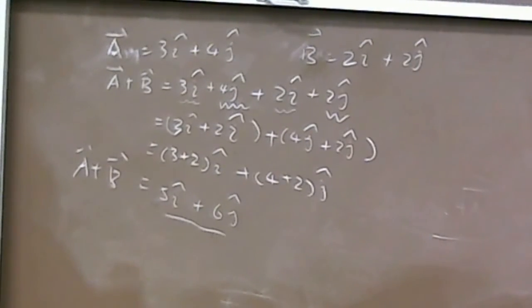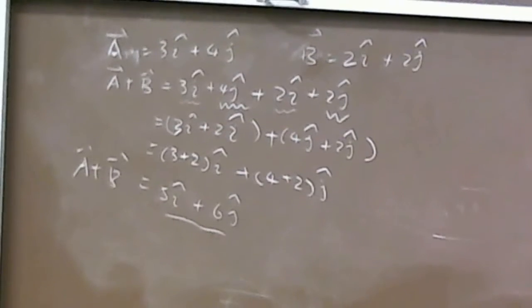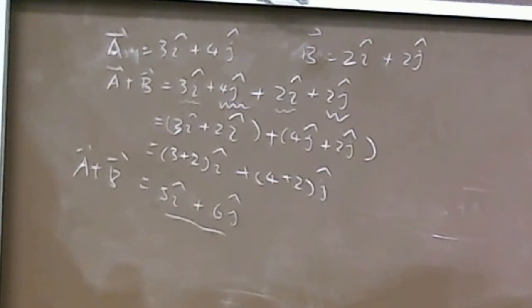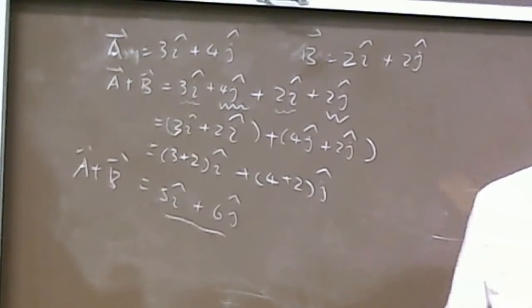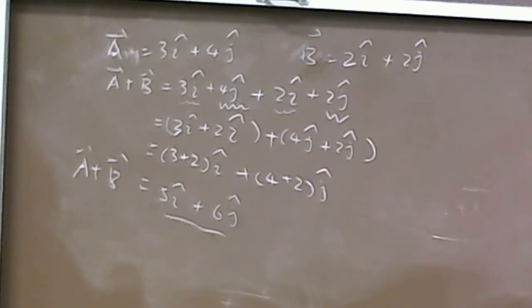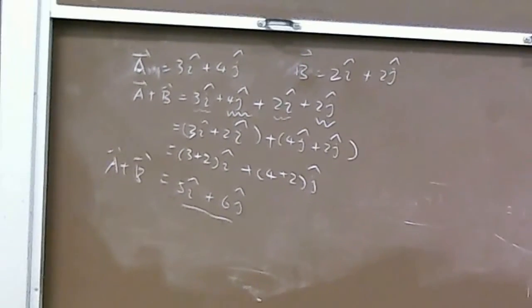And here, for the subtracting vectors, with the same kind of algebraic manipulation, you can see that A minus B should be (Ax minus Bx) multiplied by i-cap plus (Ay minus By) multiplied by j-cap. You just need to repeat this kind of manipulation. Then you will see it's very natural. Any question here for the vector manipulation?